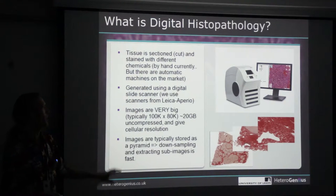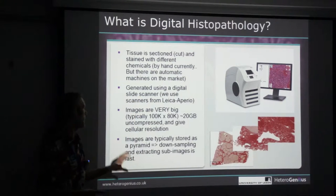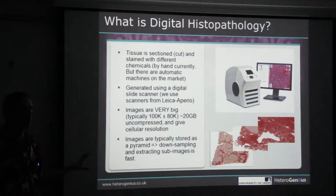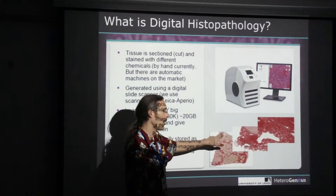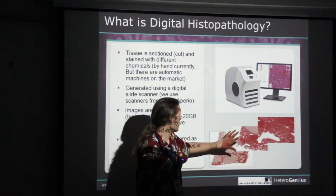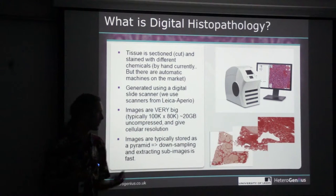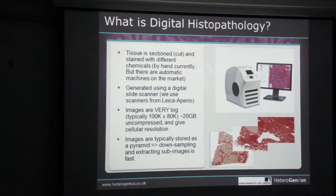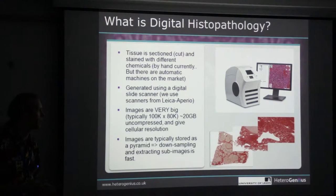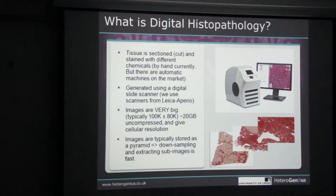Typically the first thing you do is store your images as some sort of image pyramid rather than as a single big image. You store the full resolution version, probably tiled as well so you don't have to load the whole thing, plus half resolution or quarter resolution versions. This gives you a special file format that allows you to easily access either a low-resolution part of the image or a sub-image at high resolution. Of course we can use all the different stainings used in biomedical practice - standard H&E stains, Sirius red, immunostains, and there are fluorescent scanners available too.